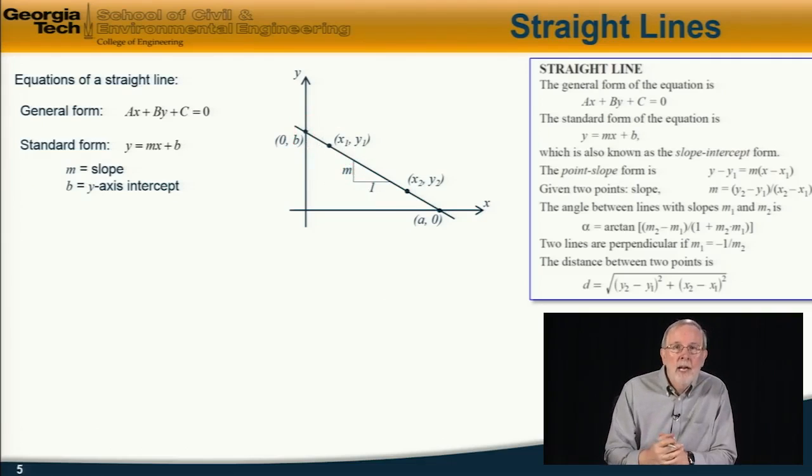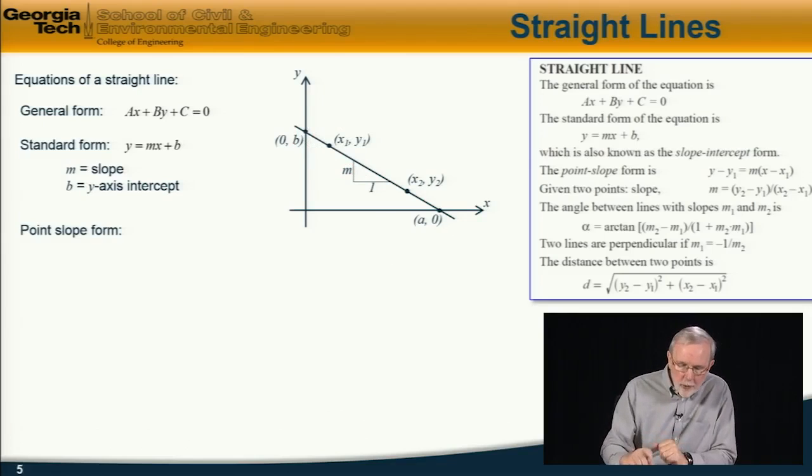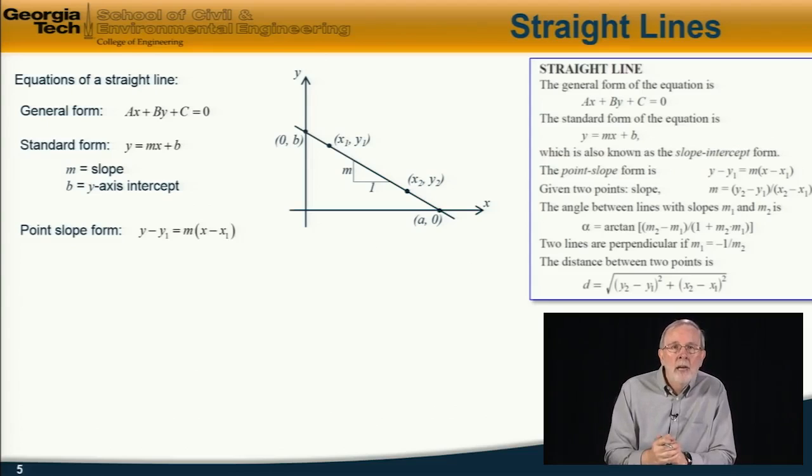So in this case, of course, m is negative. The slope of the line is negative for this example. Another form is the point slope form, which gives the equation of the line of given slope m passing through a point with coordinates x1 and y1 as shown here.